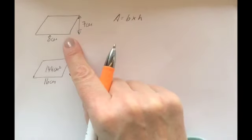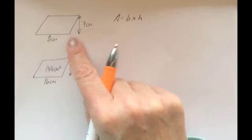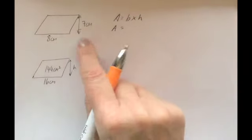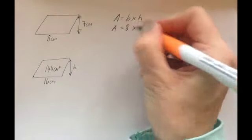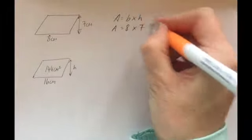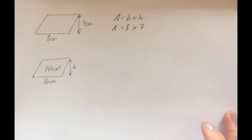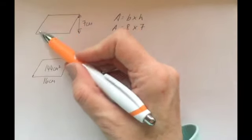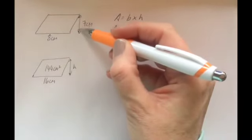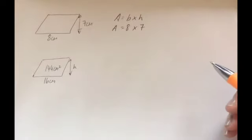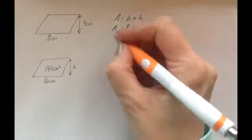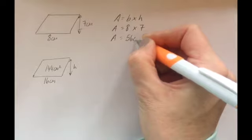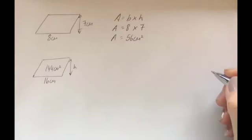On this question where I work out the area: I don't know what A is — it's what I'm looking for. The base is 8 and the height is 7. Remember it's got to be a perpendicular height, just like with the triangle — not a diagonal length. So 8 times 7 works out to be 56 centimeters squared.